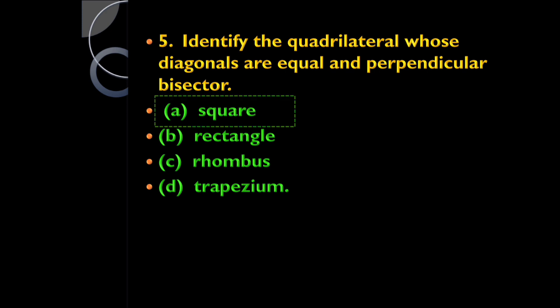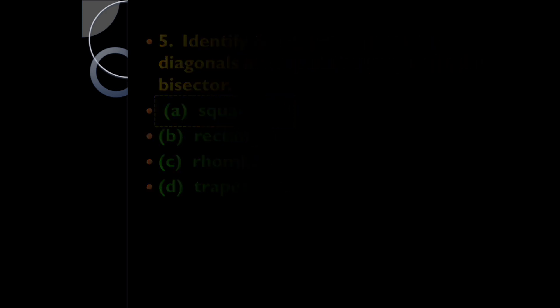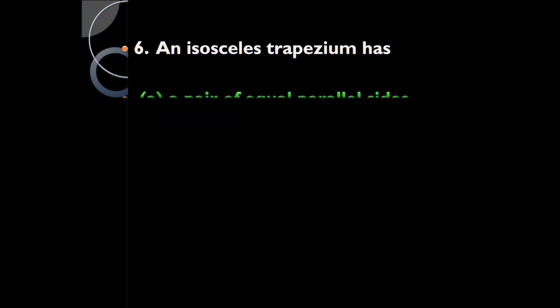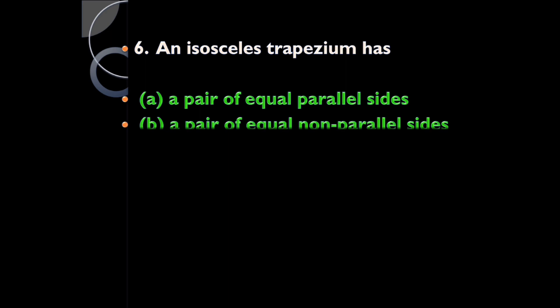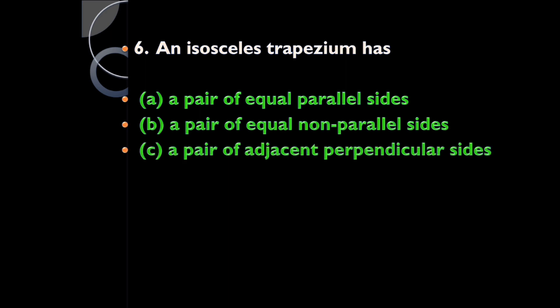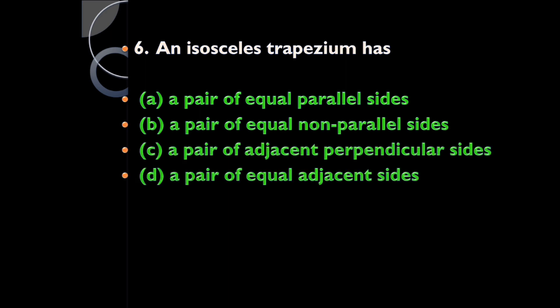An isosceles trapezium has: a pair of equal parallel sides, a pair of equal non-parallel sides, a pair of adjacent perpendicular sides? It's a pair of equal non-parallel sides, because an isosceles trapezium is a special trapezium whose non-parallel sides are equal.